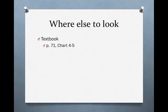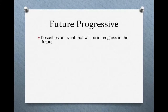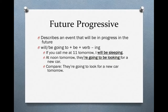Future Progressive. For more information, look in your textbook on page 71 at chart 4-5. The Future Progressive describes events that will be in progress in the future. You use will or be going to plus the verb be plus the verb -ing. For instance, if you call me at 11 tomorrow, I will be sleeping. Will plus be plus verb -ing. Will be sleeping.